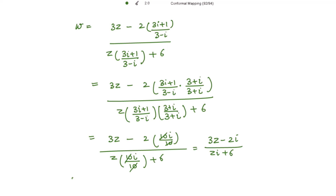Finally, the required bilinear transformation is w equals 3z minus 2 iota over z iota plus 6. There is another method to obtain this transformation, which will be discussed in the next content. Thank you.